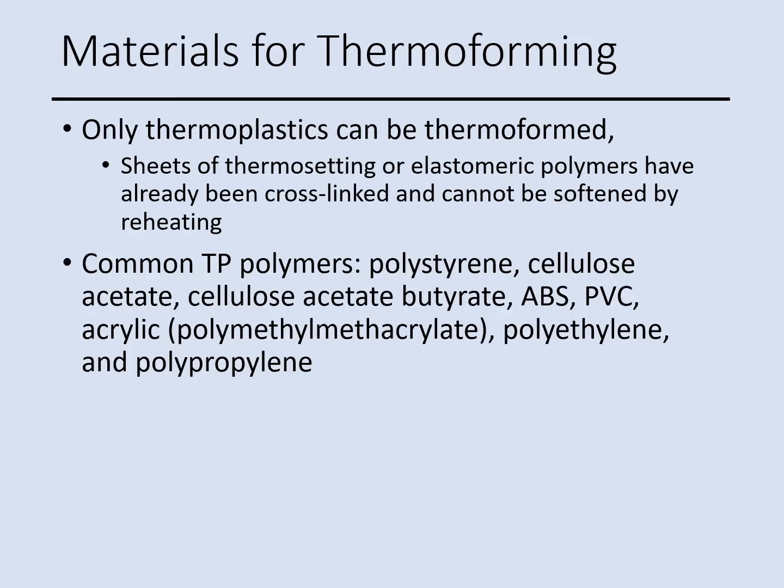In the thermoforming process, only thermoplastic material can be used. The main reason is that thermoset and elastomer materials already have cross-links, so reheating them to make them soft does not work — they cannot become soft again. Some thermoplastic polymers used in thermoforming include polystyrene, cellulose acetate, ABS, PVC, and others.